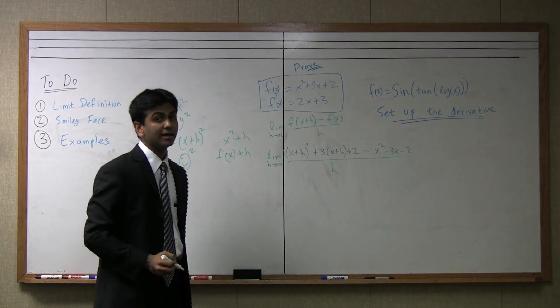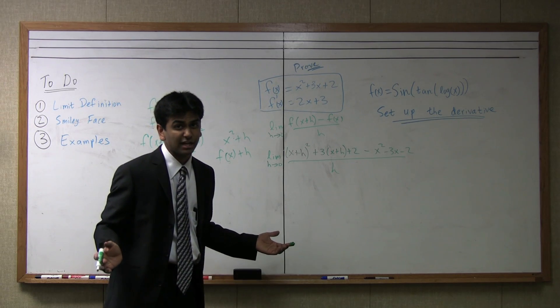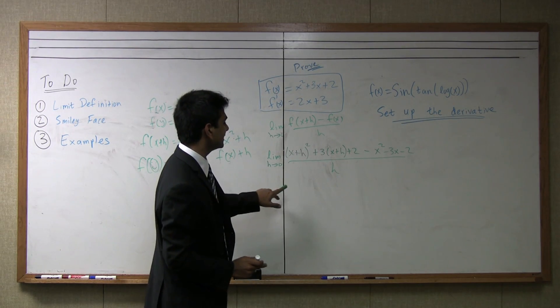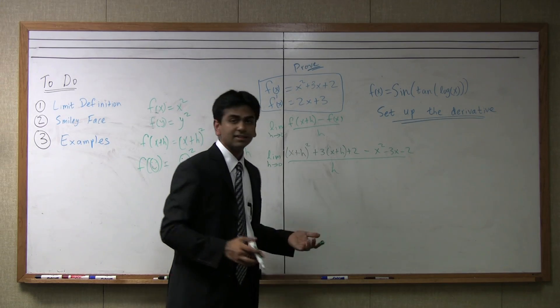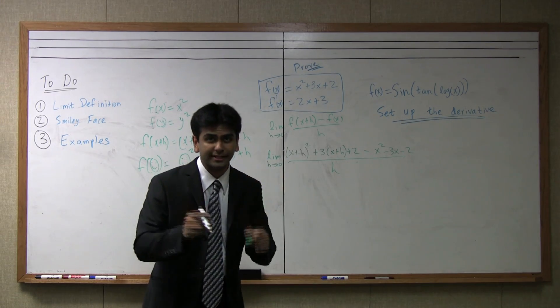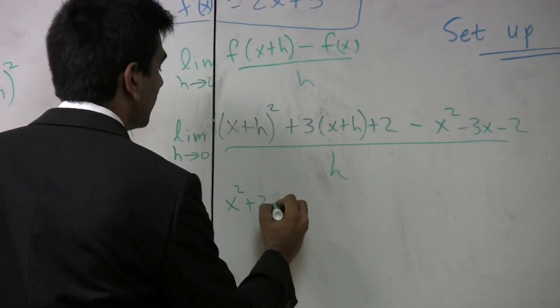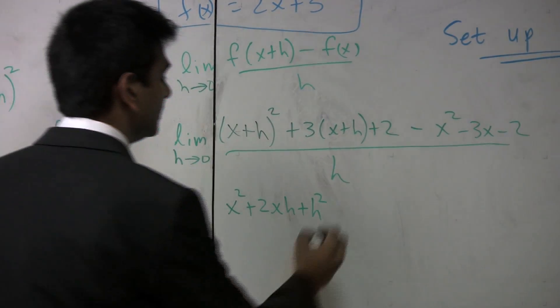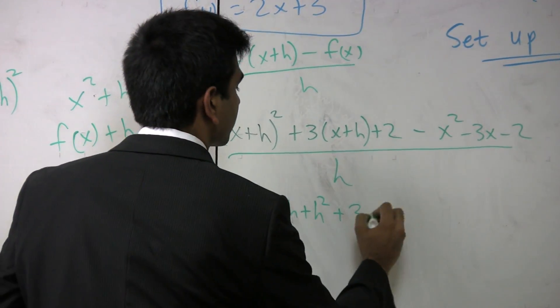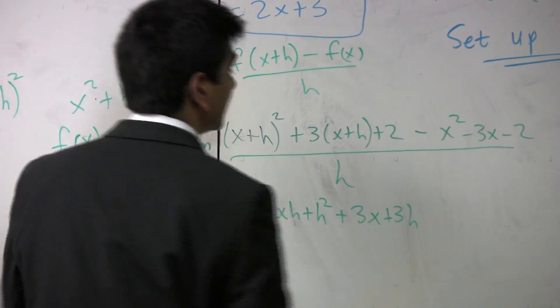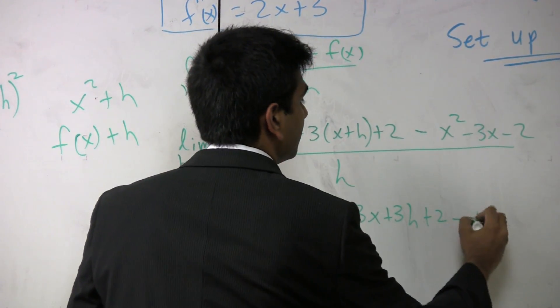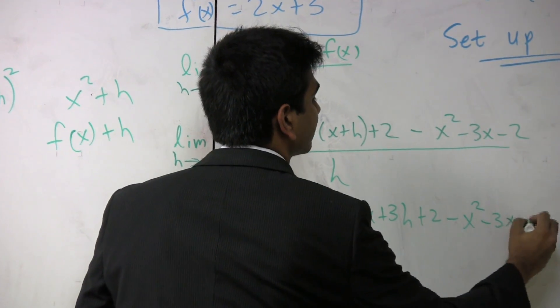Running off the limit everywhere is important. A lot of professors take off points for not writing the limit. So, looking back at this, the next step is your favorite f word, foiling. x squared plus 2xh plus h squared, that's what this guy turns out to be, plus 3x plus 3h, that's clearly what this turns out to be, plus 2 minus x squared minus 3x minus 2.